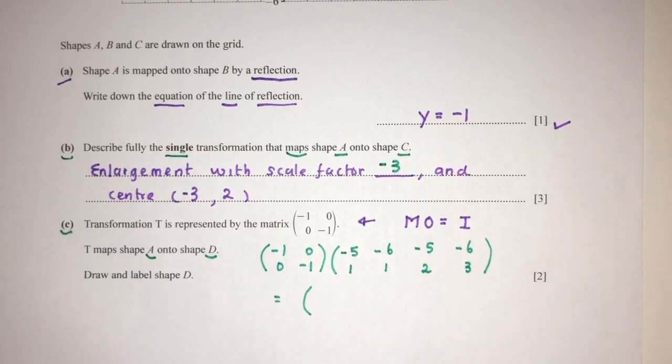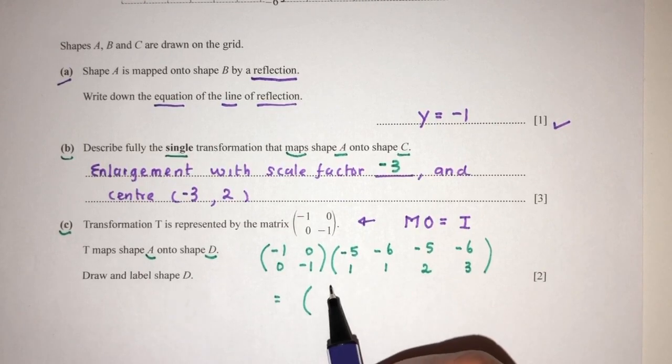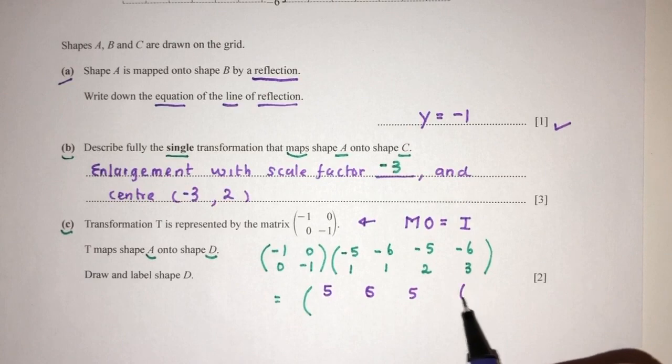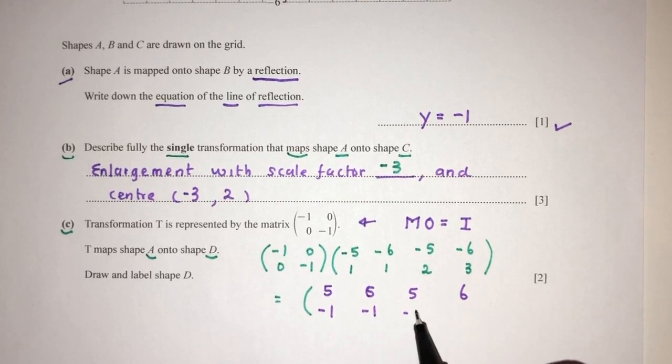That will give you... As you can see, -1 times this will be 0, so we just need to do this one: 5, 6, 5, 6. And this will be 0, this will be -1, -1, -2, -3.